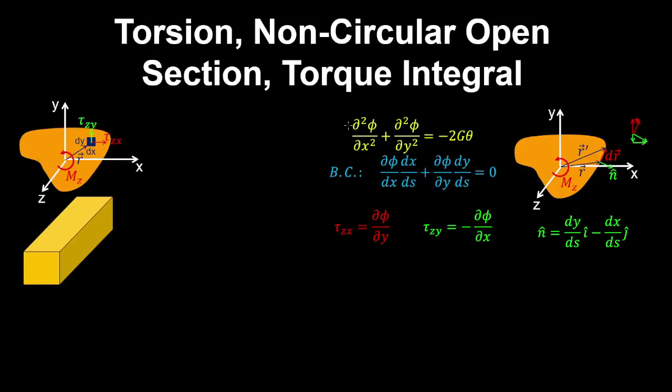We previously derived Laplace's equation for the torsion of a non-circular shaft and also the boundary condition. We use the stress function to represent the shear stresses in the z-plane. Now we want to relate the torque applied on the section to the stress function through the shear stresses.